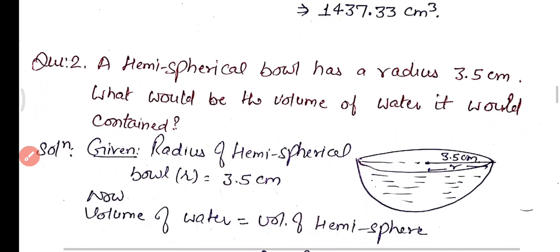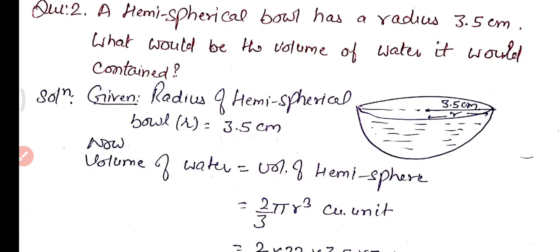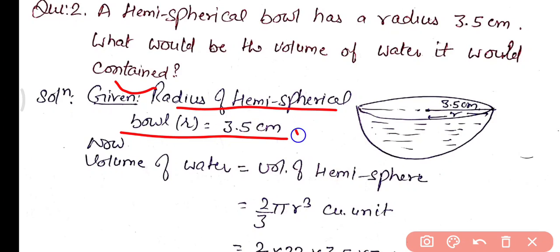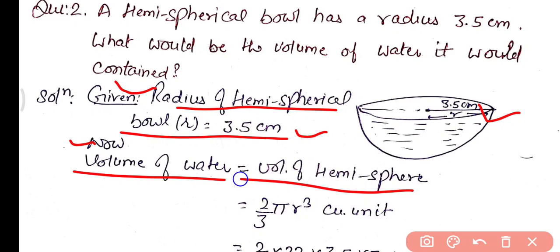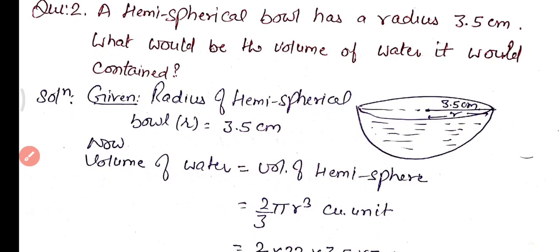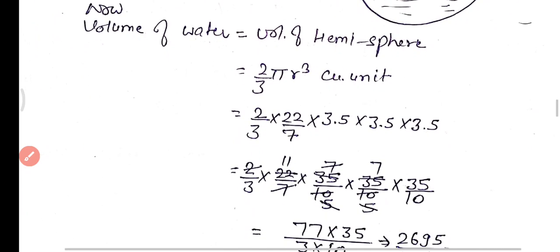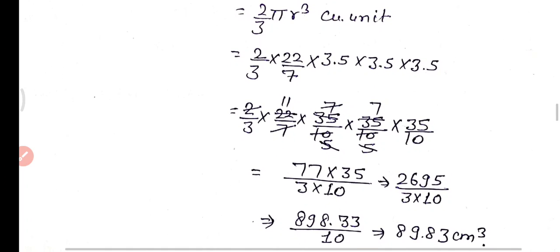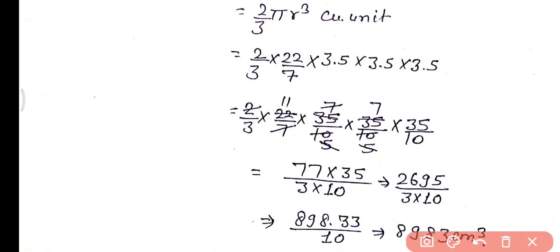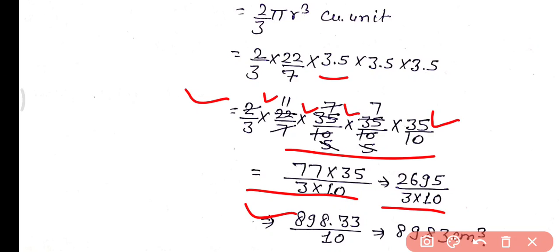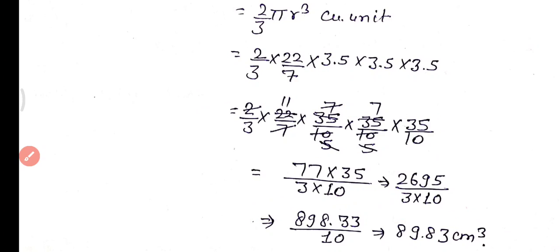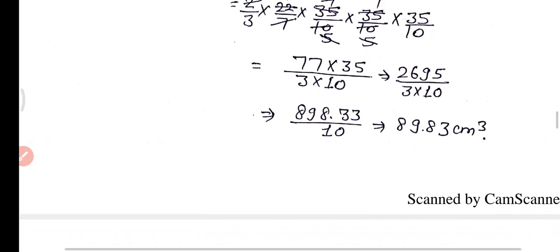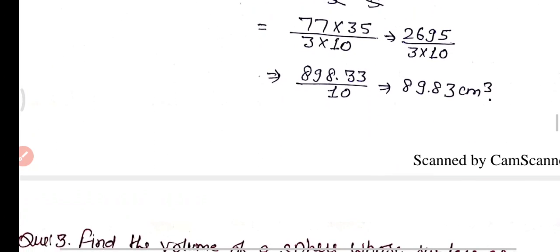Practice question 2: a hemispherical ball has a radius of 3.5 centimeters. What is the volume of water it would contain? Volume of hemisphere = 2/3 π r³ = 2/3 × (22/7) × (3.5)³. Writing 3.5 as 35/10 and simplifying, we get 89.83 centimeter cube as the volume of the hemispherical ball.